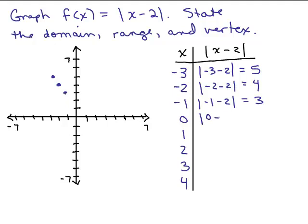We'll put in 0. Absolute value of −2 is 2, right? Put in 1. We have |−1|, which is 1. And I'm putting in 2. That's |0|, which is 0 at this point here.